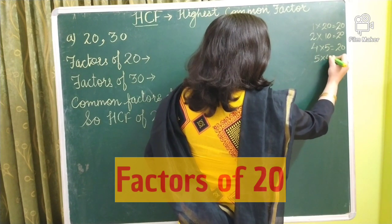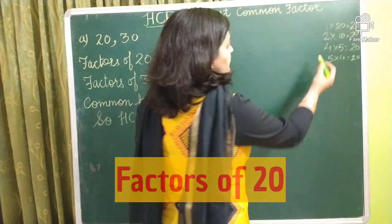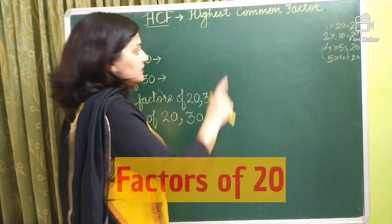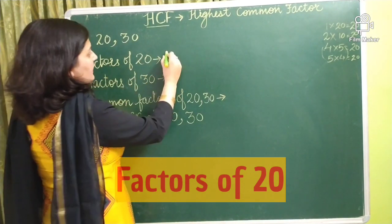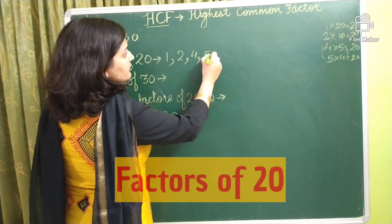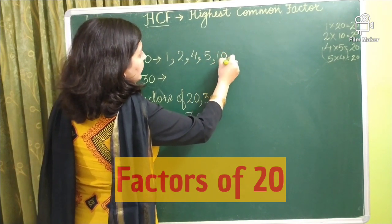And then 5 fours are 20. So here we have found the interchanging digits, numbers. So the factors of 20 are 1, 2, 4, 5, 10 and 20.